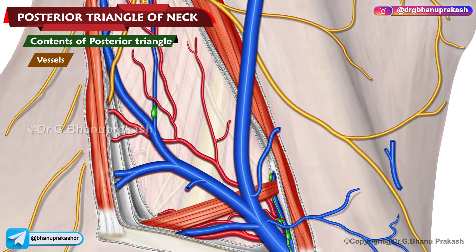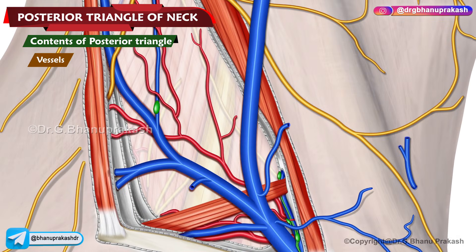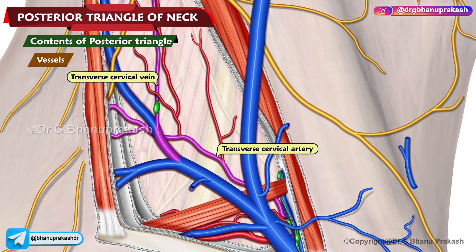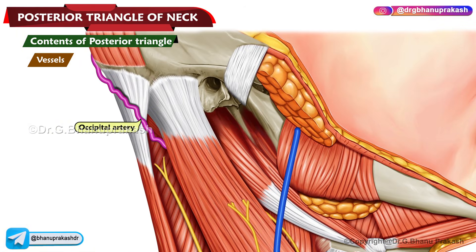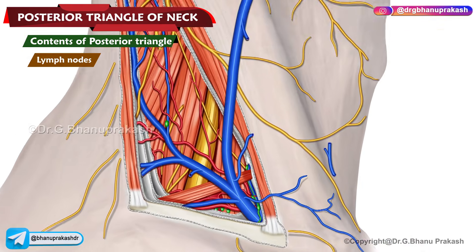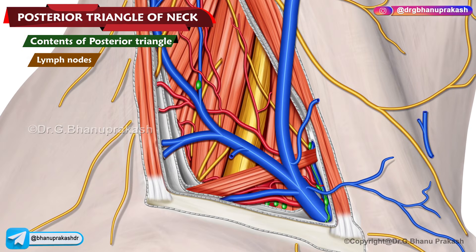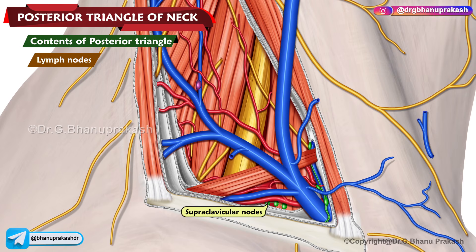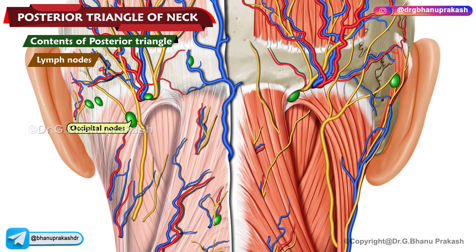The vessels that pass in the occipital triangle include the transverse cervical artery and vein and the occipital artery. Along the posterior border of the sternocleidomastoid muscle, more in the lower part, the supraclavicular nodes and, at the upper angle, the occipital nodes are located.